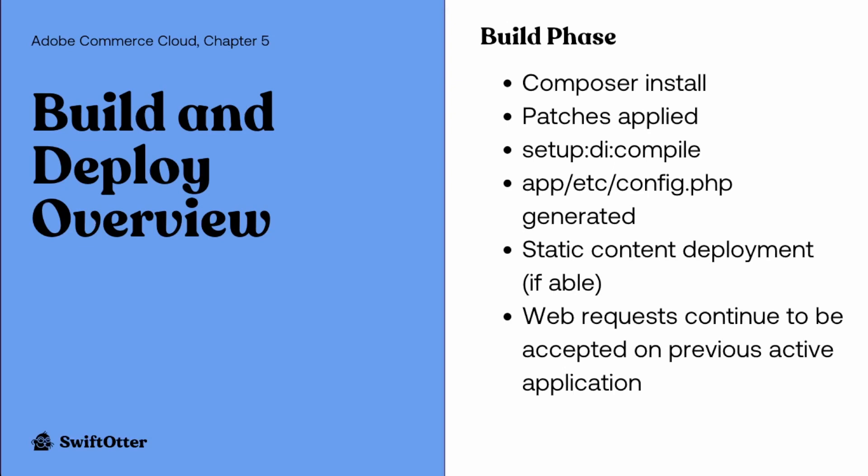In the build phase, everything that has to do with the manifestation of the static file state of your application is done. The composer installation is run, patches are applied, the DI compilation process is run, and generated code files are created. If there is not an existing app.etc.config.php file, that is generated. Static content deployment is done if the correct configuration is in place to allow that to happen.